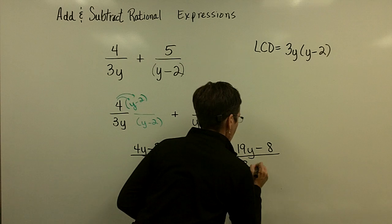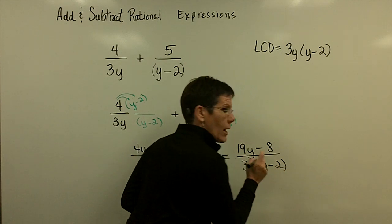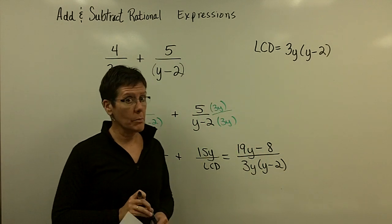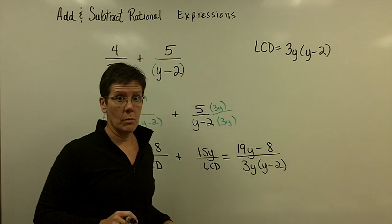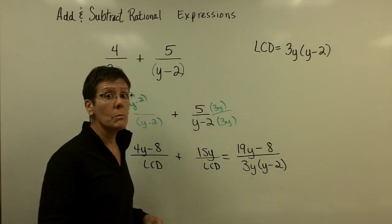So 4y and 15y add to be 19y, and then this minus 8 over the common denominator now of 3y times y minus 2. And I always pause to ask myself, can I simplify this fraction? But there's nothing that could be done with that numerator to factor it so that I could remove something top and bottom.